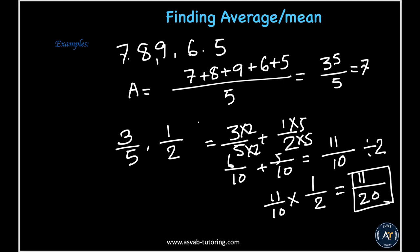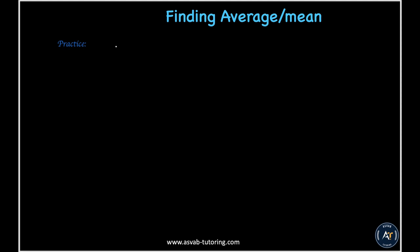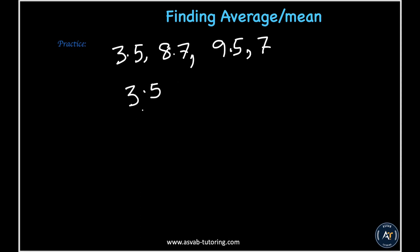Here's a practice problem you can try yourself: find the average of 3.5, 8.7, 9.5, and 7. Let's add them together: 3.5 plus 8.7 plus 9.5 plus 7.0.